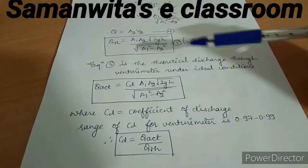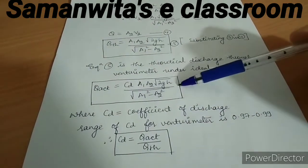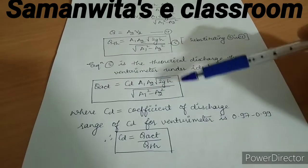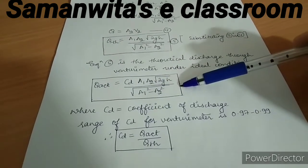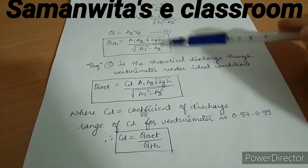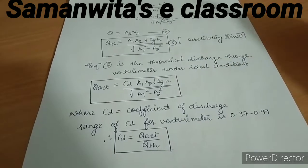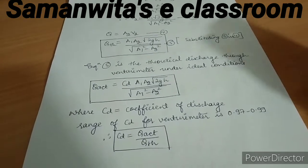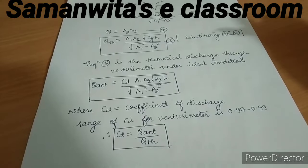So this is all about the derivation of flow through the venturimeter. This formula can be used for calculating the actual discharge. In case you want to calculate the theoretical discharge you can use this formula. In the next class we will see some numericals based on this concept. Thank you.